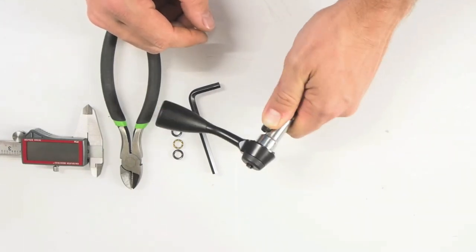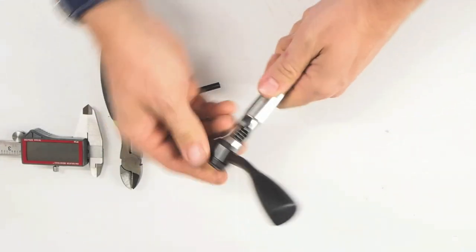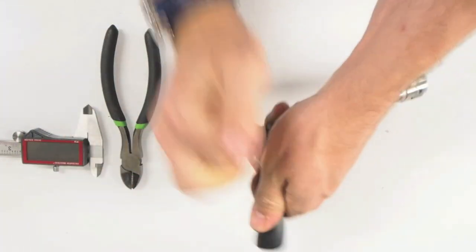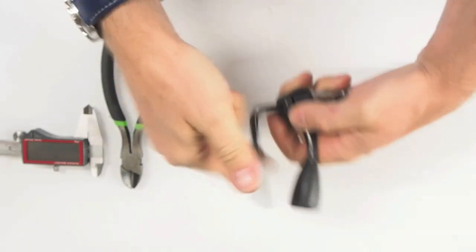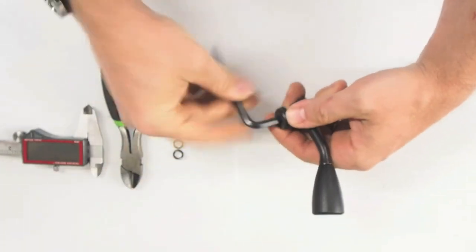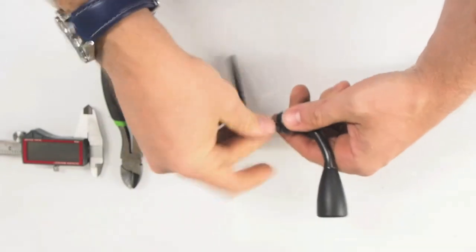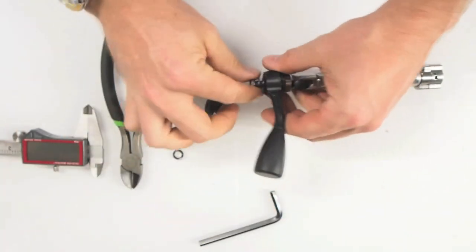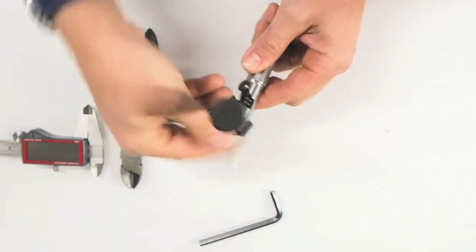First things first, we're going to decock it just like that, and then we're going to take our allen wrench. Now, some of these are very hard to first break free—the guys at Savage like to screw these in really hard—but don't worry, they don't break.